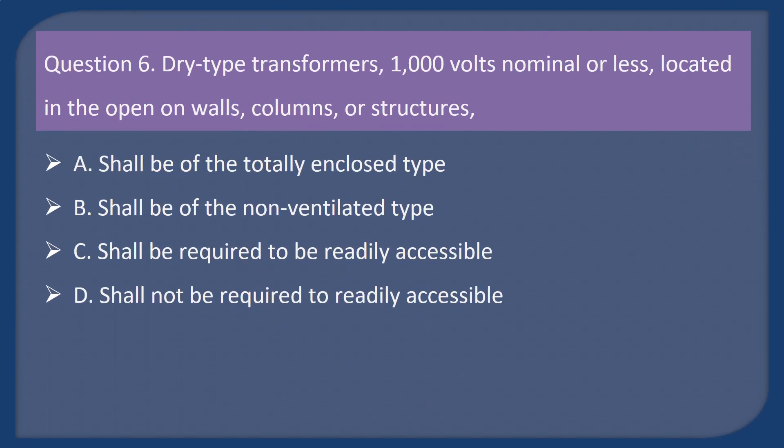Question 6. Dry type transformers, 1,000 volts nominal or less, located in the open on walls, columns, or structures. A. Shall be of the totally enclosed type. B. Shall be of the non-ventilated type. C. Shall be required to be readily accessible. D. Shall not be required to be readily accessible.